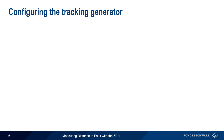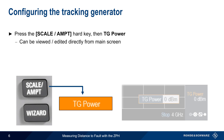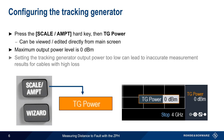The ZPH's internal tracking generator, or signal source, is configured by pressing the Scale Amplitude hard key, and then selecting TG Power from the menu. Note that the tracking generator power can also be viewed and edited directly from the main ZPH screen. The maximum configurable output power is 0 dBm. Care should be taken not to set the tracking generator output power level too low, since this can lead to inaccurate measurement results for cables with high loss.